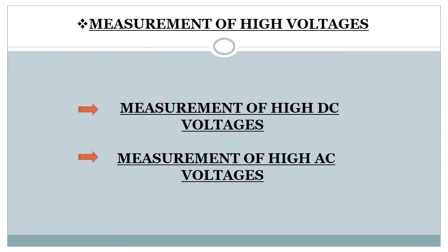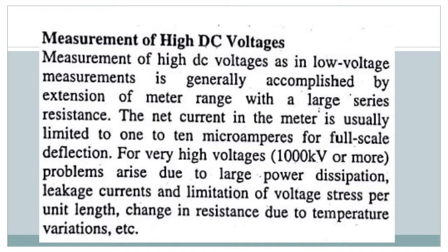Measurement of high voltage includes measurement of high DC voltage and measurement of high AC voltages. Measurement of high DC voltage, as in low voltage measurements, is generally accomplished by the extension of meter range with a large series resistance. The net current in the meter is usually limited to 1 to 10 microamperes for full-scale deflection.